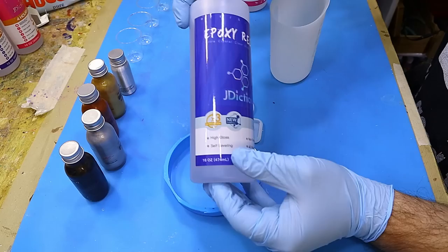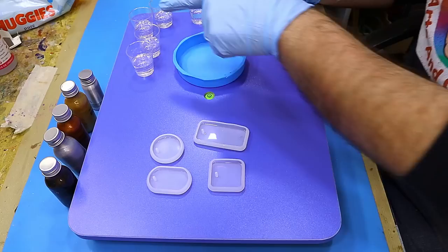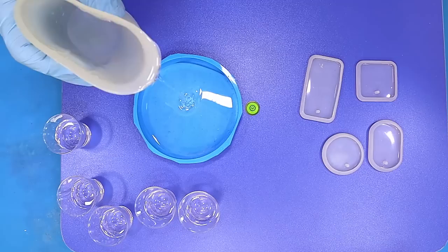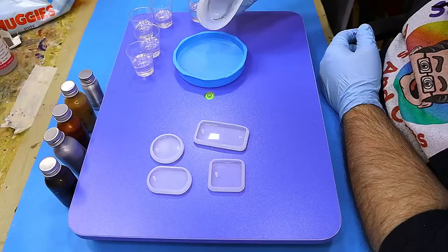Before I start, I'm going to mix up my resin. I'm using the brilliant Jdiction X3 UV Protect. I like using this for all my jewelry. It really does work brilliantly, and I'm also working on my new leveling table. I will link that in the description below along with everything else. It has transformed my resin work.